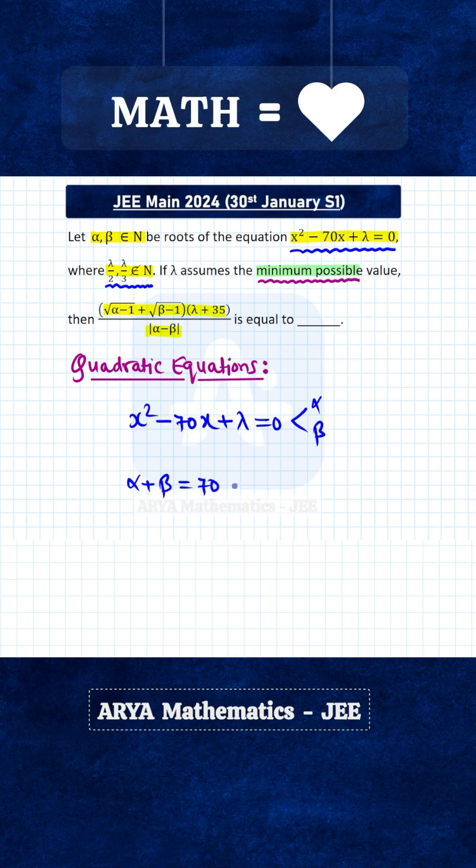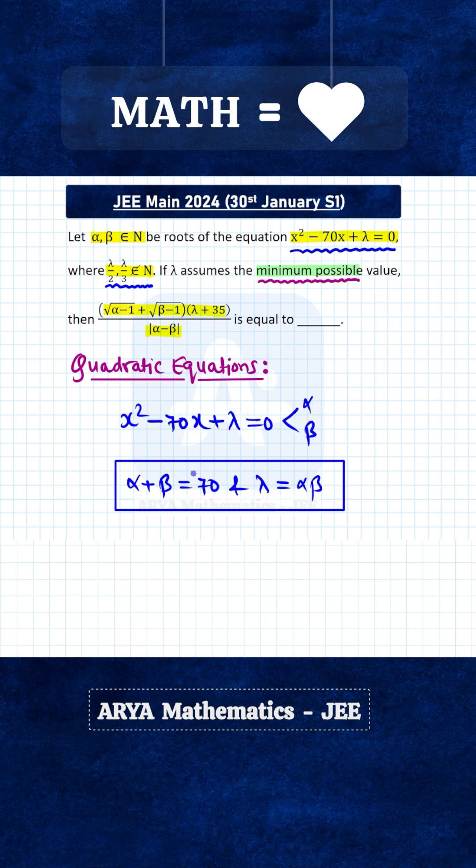Alpha plus beta will be 70, and the product of roots alpha into beta will be c by a. So that means alpha into beta is lambda. Now we have to find two natural numbers alpha and beta such that their sum is 70 and their product is lambda, and the product is minimum. Also notice that lambda is neither a multiple of 2 nor a multiple of 3.